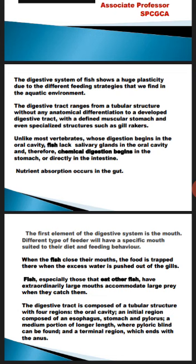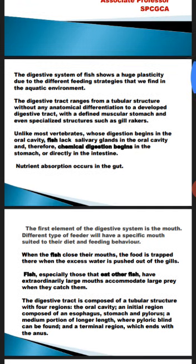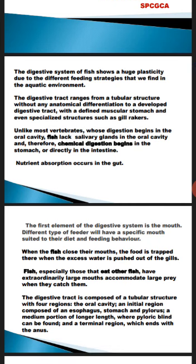The first element of the digestive system is the mouth. Different types of feeders have a specific mouth suited to their diet and feeding behavior. The mouth is shaped according to the feeding behavior of the fish. When the fish closes its mouth, the food is trapped and excess water is pushed out. Food particles get trapped inside the mouth and excess water is pushed out through the gills.